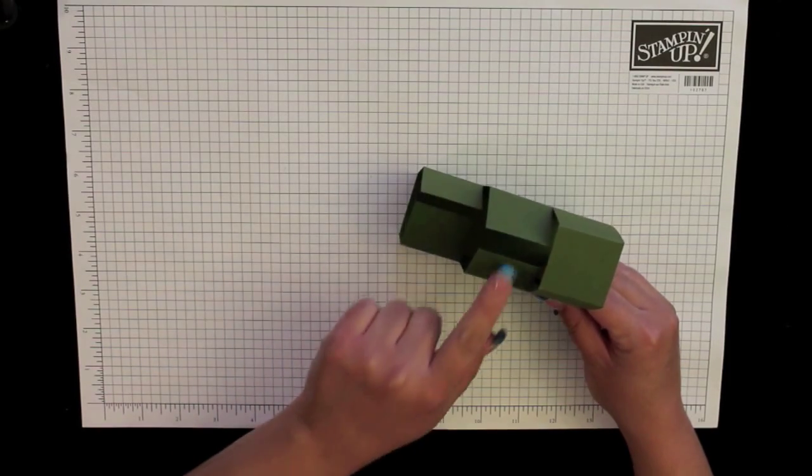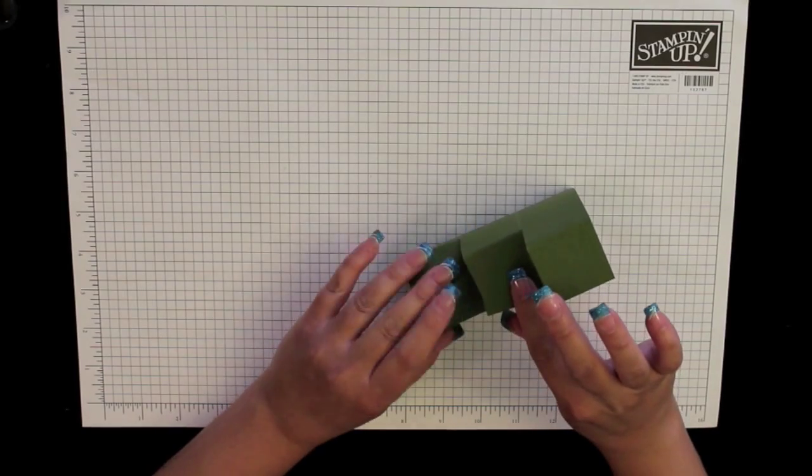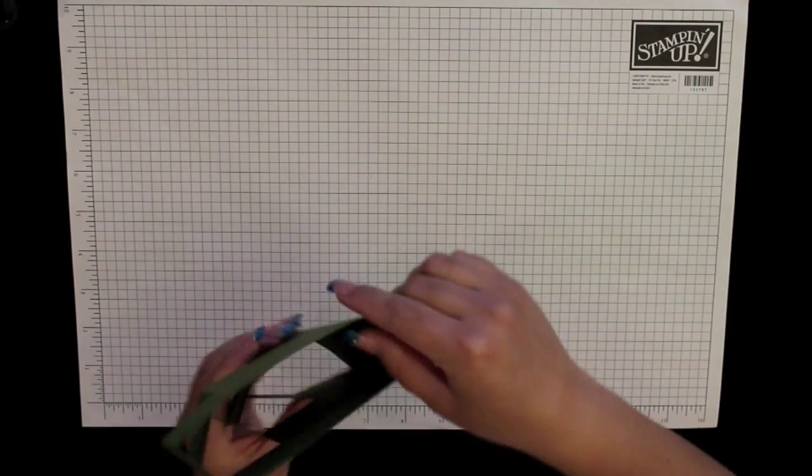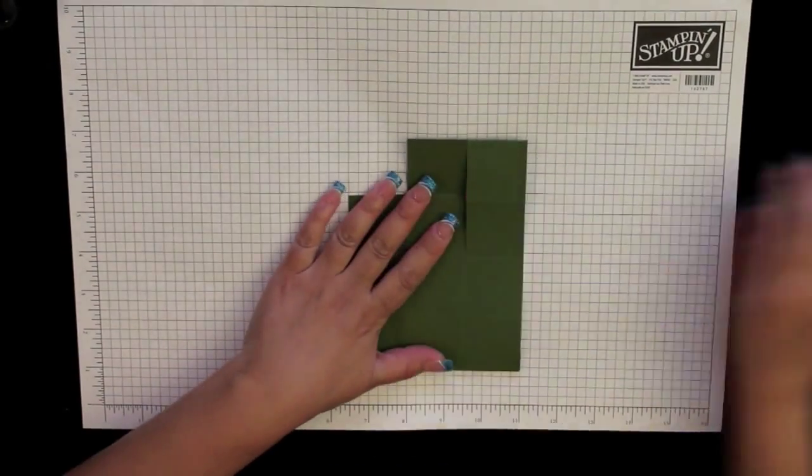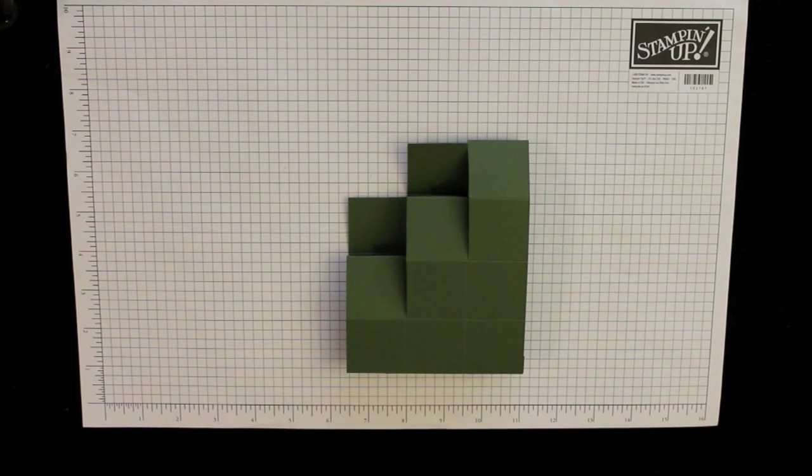What we're going to do next is we're going to add some adhesive on here and here and fold these over and that's going to make our steps. So the bottom of the box is solid, the back of the box is open. Okay, so for this I'm going to go ahead and add some sticky strip and adhere it in place.